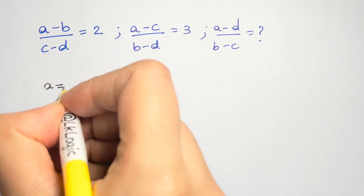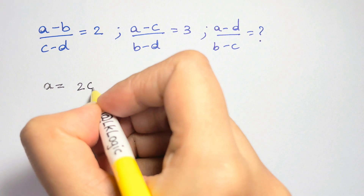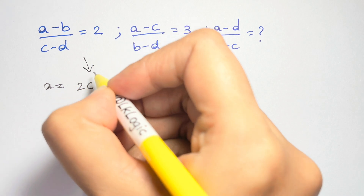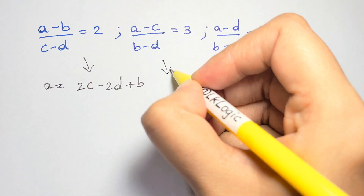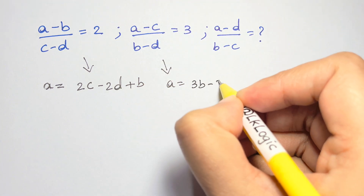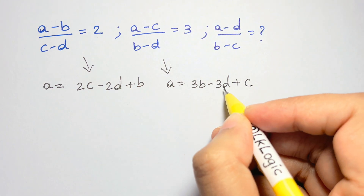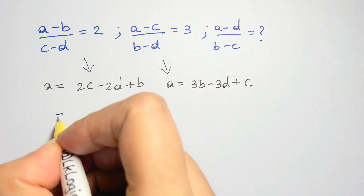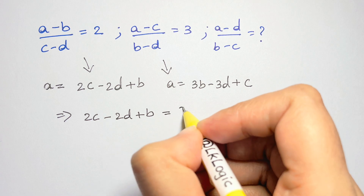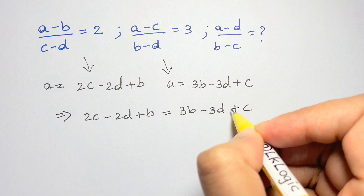What I think we can do is find a from the first equation: a is equal to 2c minus 2d plus b. Now from the second equation, a is equal to 3b minus 3d plus c. So I've got two expressions for a — let me equate both of them: 2c minus 2d plus b is equal to 3b minus 3d plus c.